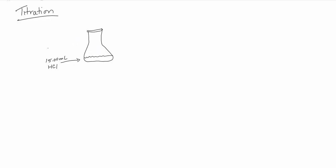Then we're going to set up what's called a burette. In the laboratory we use a burette; for the home lab, what we use is typically a syringe. A burette is like a really large syringe and it is graduated, so we can tell exactly what volume we have. In the burette goes a standardized sodium hydroxide in this particular example.